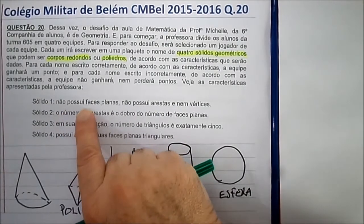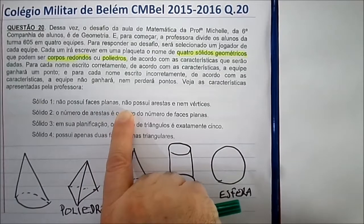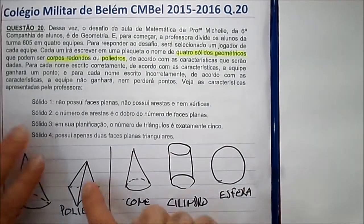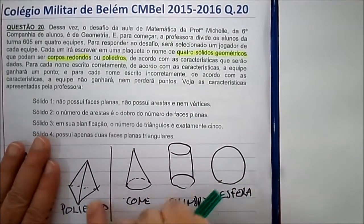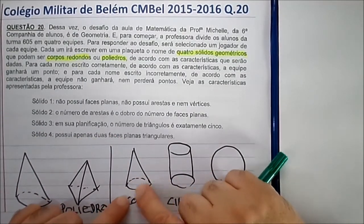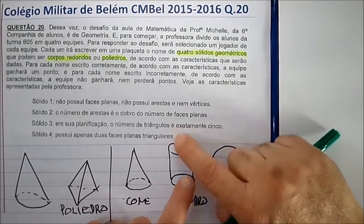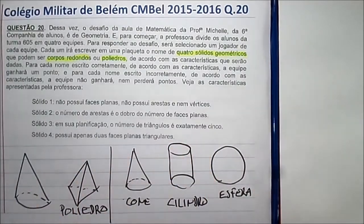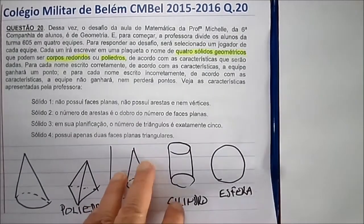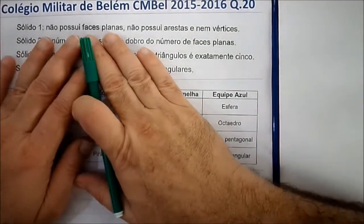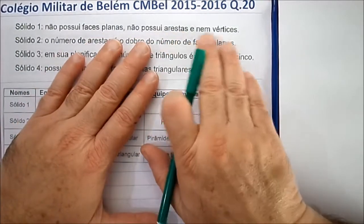Qual seria um sólido que não possui faces planas, nem arestas, nem vértices? Os poliedros todos têm faces planas. O cone, apesar de ser um corpo redondo, tem uma face plana — a base dele. O cilindro tem duas faces planas. O sólido que não tem faces planas é a esfera — ela é um sólido que não tem face plana, nem arestas, nem vértices.